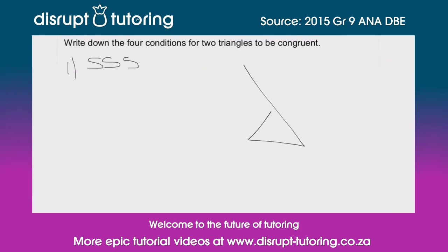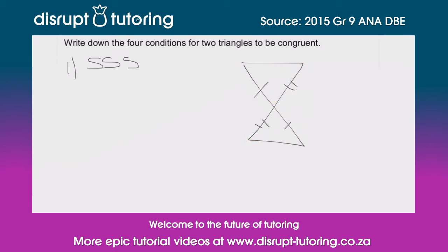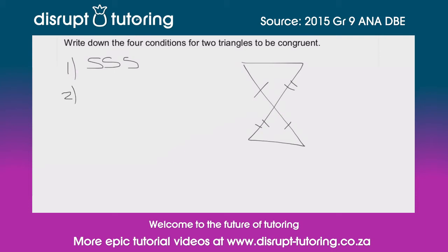Let's move on to the second one. Looking at this shape, we see that this side is equal to this side, and this side is equal to this side. We can also see that those two angles are the same — that angle equals that angle because we've got vertically opposite angles. So we've got two sides that are the same and an included angle — very important that the angle is included — giving us Side-Angle-Side (SAS).